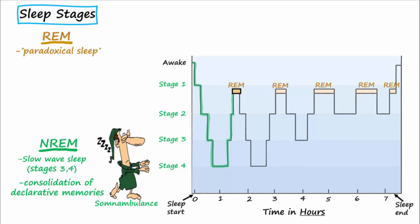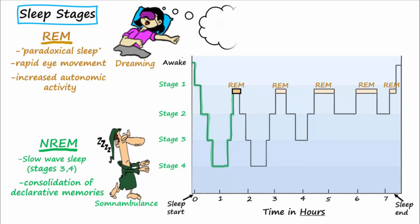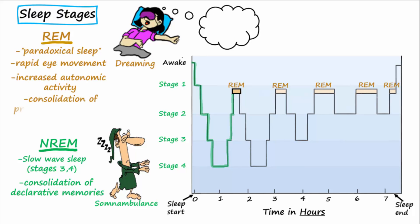REM is characterized by rapid eye movement, increased autonomic activity, and dreaming. Consolidation of procedural memories also occurs during REM.